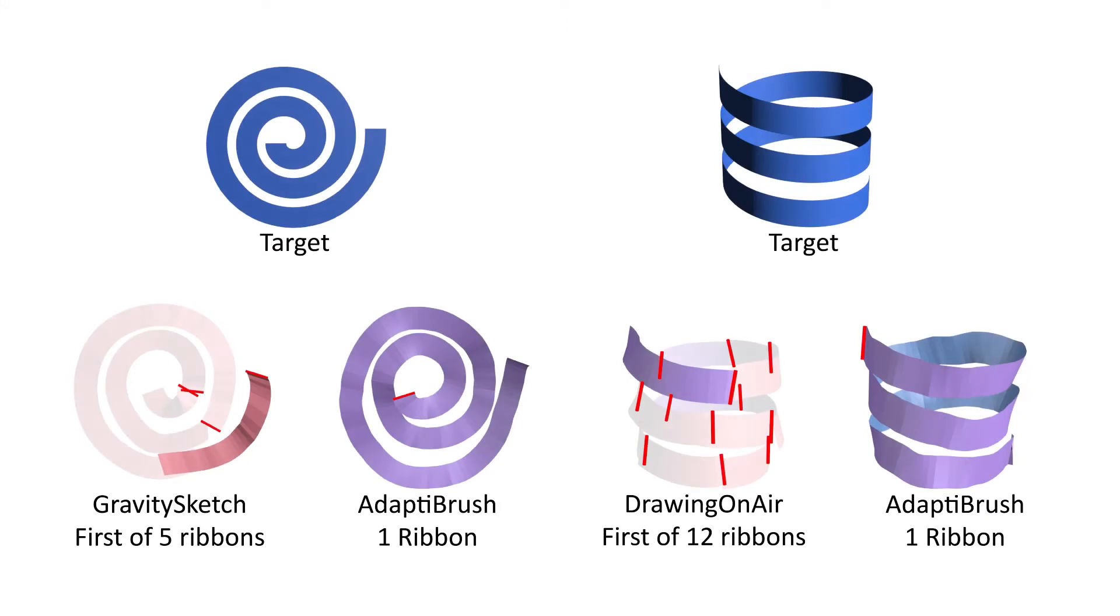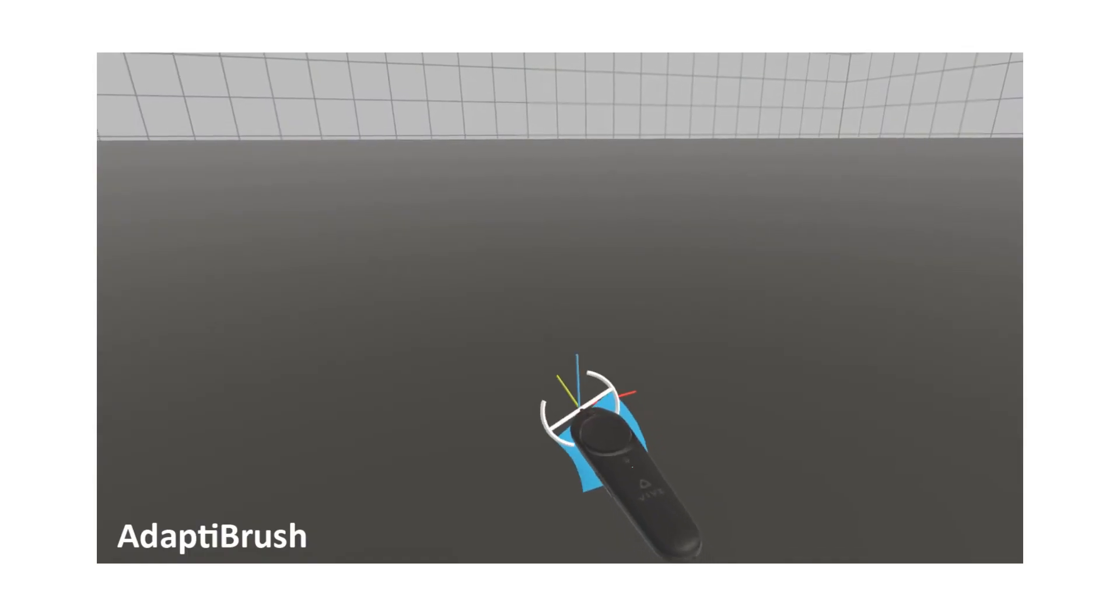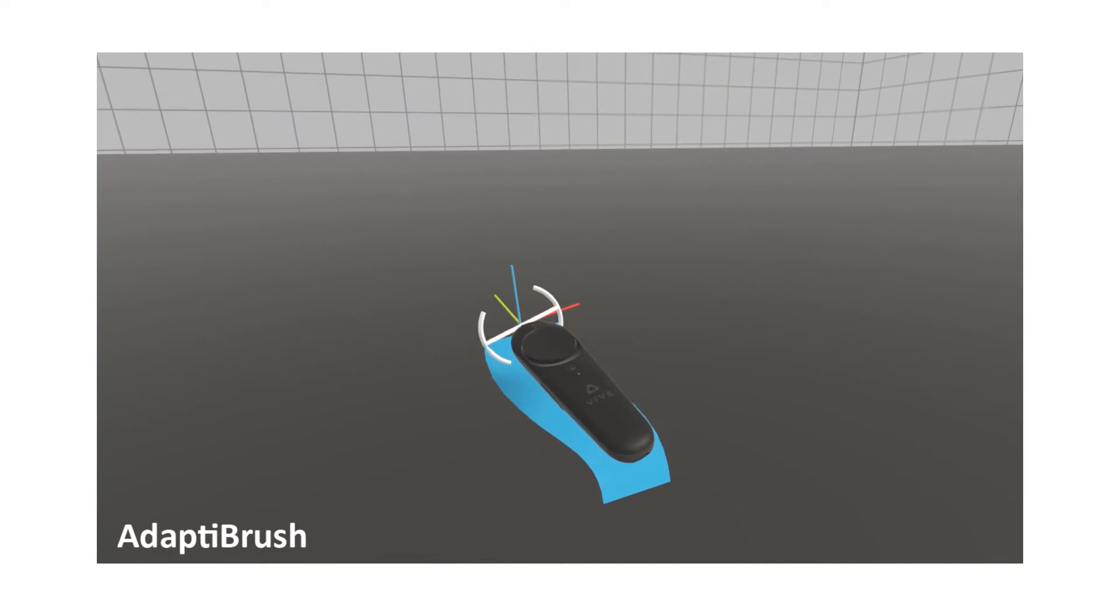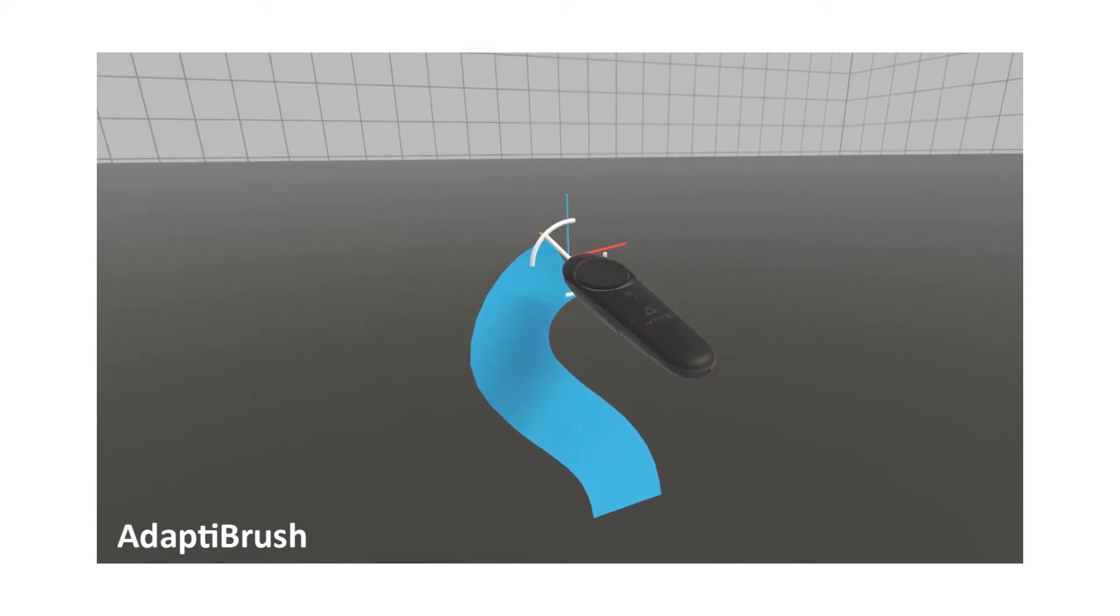We overcome this limitation and expand the range of ribbon geometries users can draw using purely translational controller motion by using an adaptive ruling computation mechanism. Similar to prior brushes, we use the trajectory of the user's handheld 6 degree of freedom controller in 3D space as the ribbon path.